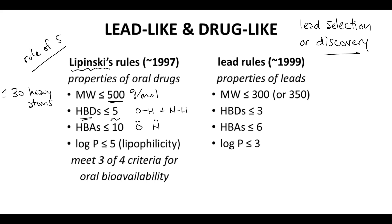Rule four: a drug should have a log P — which is a measure of lipophilicity — equal to or less than five. Molecules that satisfy at least three of the four criteria will likely, no promises, be orally available.